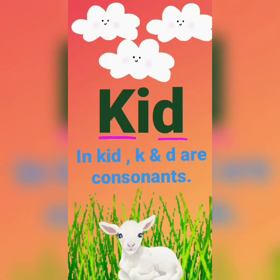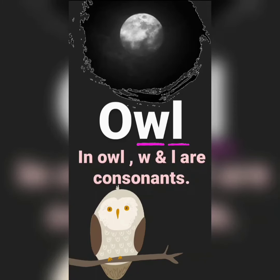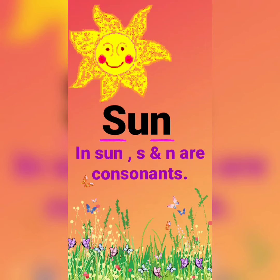K, I, D — Kid. In Kid, K and D are consonants. O, W, L — Owl. In Owl, W and L are consonants. S, U, N — Sun. In Sun, S and N are consonants.